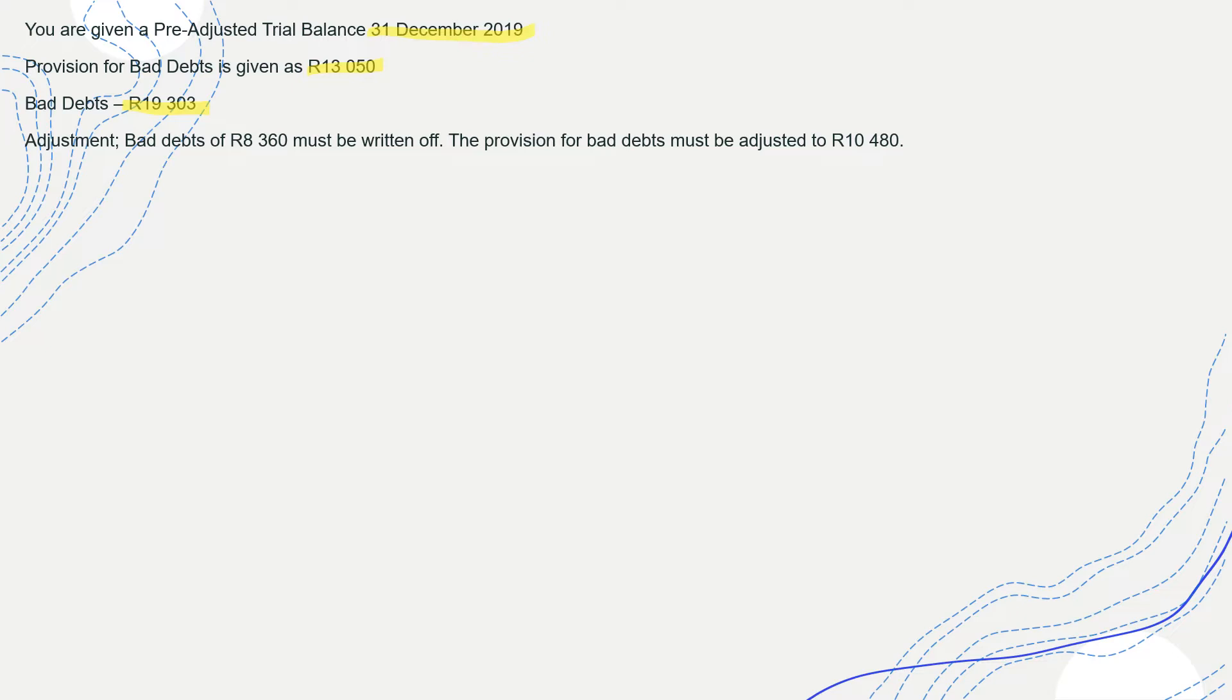The adjustment: bad debts of R8,360 must be written off. The provision for bad debts must be adjusted to R10,418. So we have R8,360 to be written off and provision should be adjusted to R10,418.